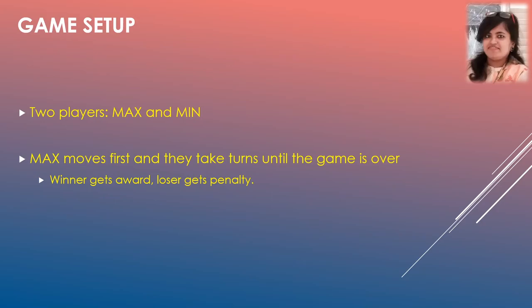Now let's talk about how to set up the game for multi-agent purposes. We simplify the scenario and assume there are only two players. One player is named Max and the other is named Min. Max always aims to get the maximum value possible, and Min aims to get the minimum value possible. Max moves first and they take turns until the game is over. After the game is completed, the winner gets a reward and the loser gets a penalty.